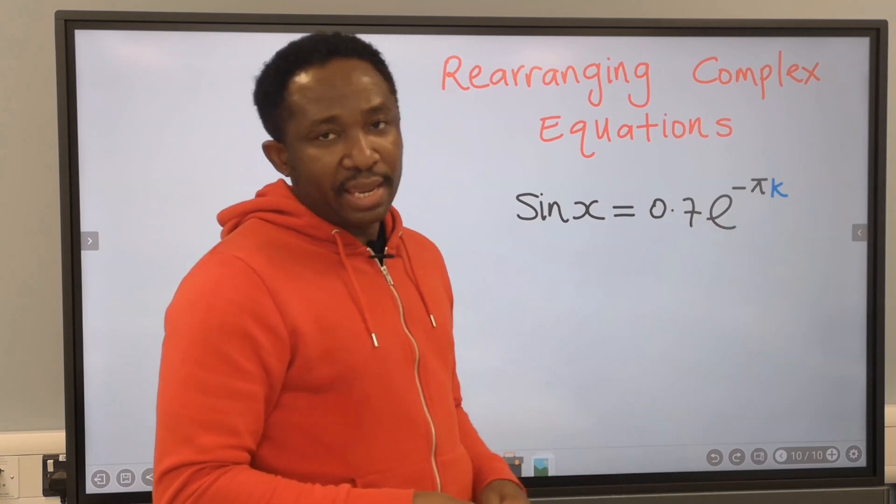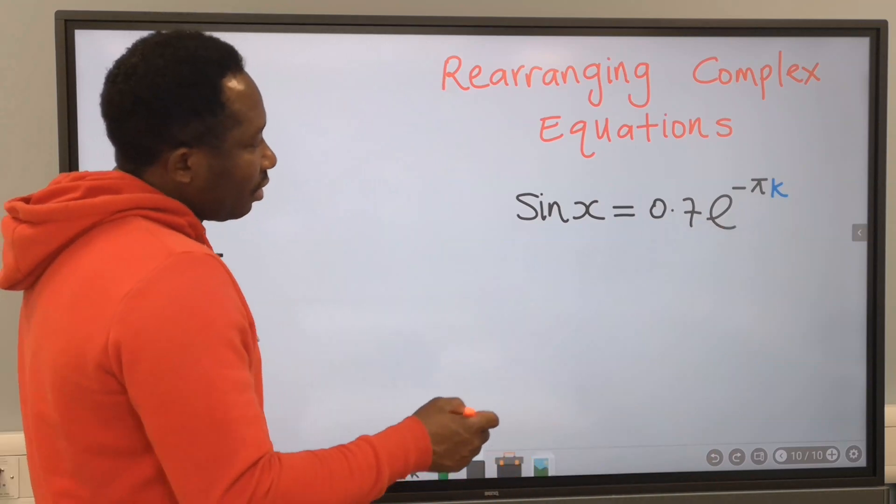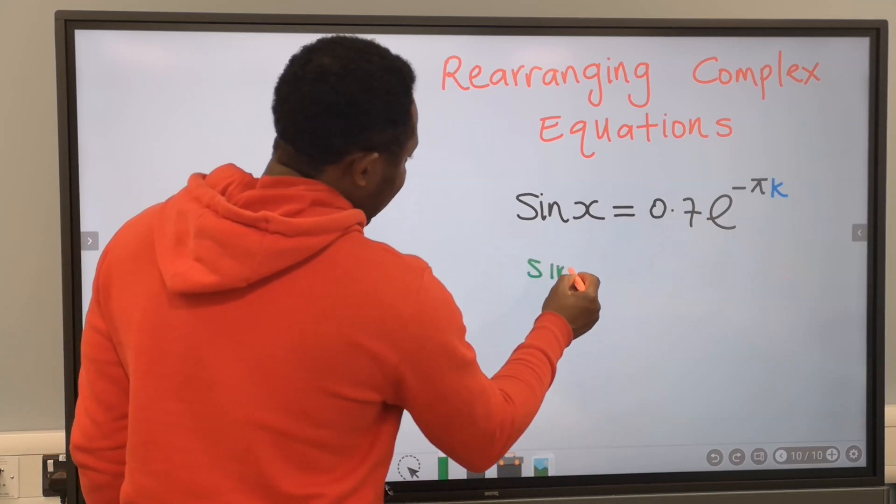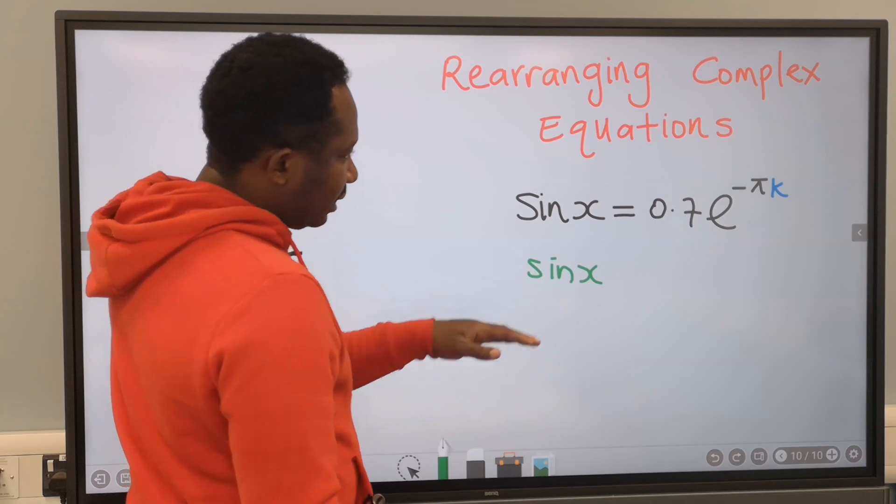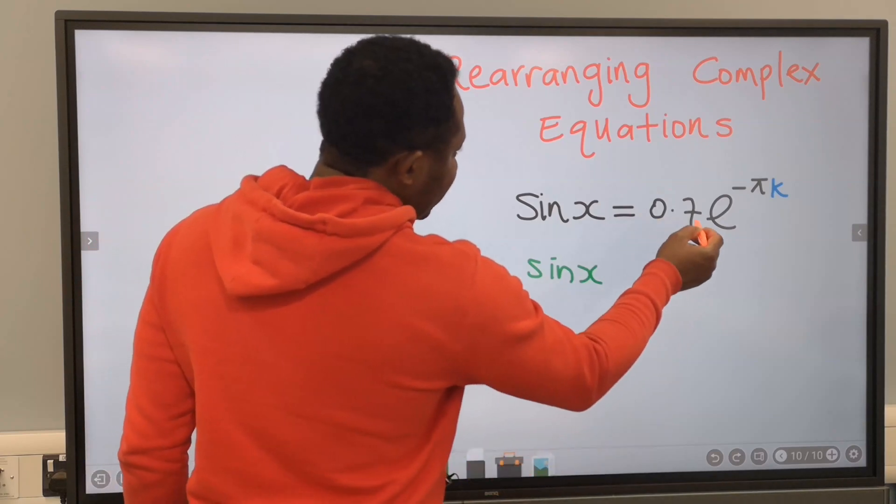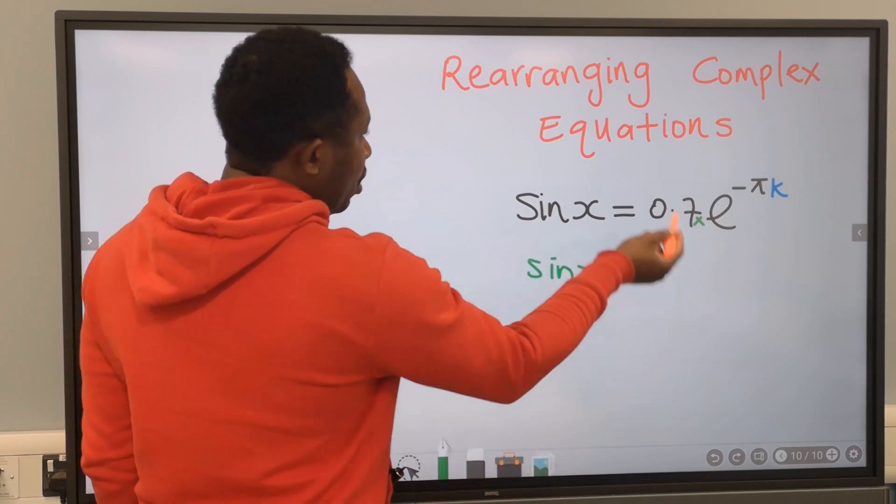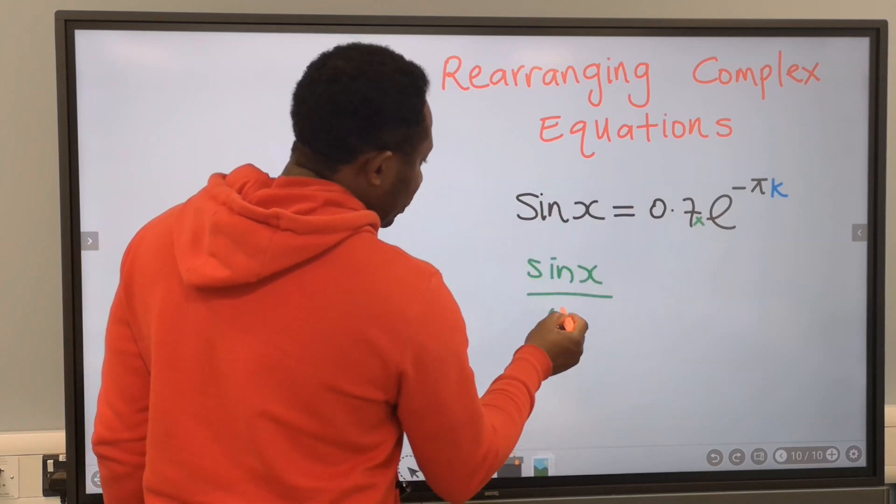We're going to make k the subject. To make k the subject here, sin x is on this side, but 0.7 is multiplying the exponential. On the other side, it's going to divide.